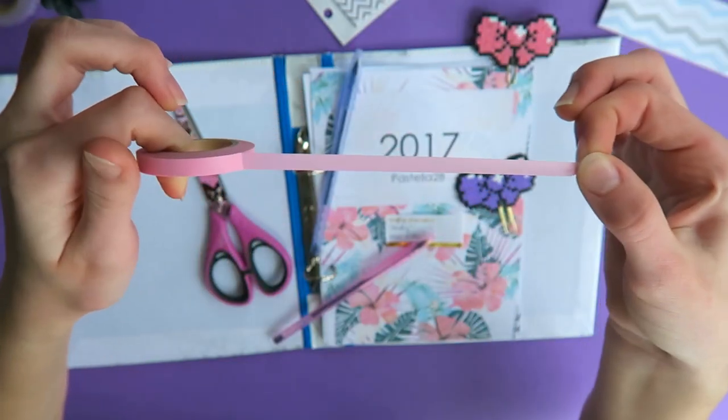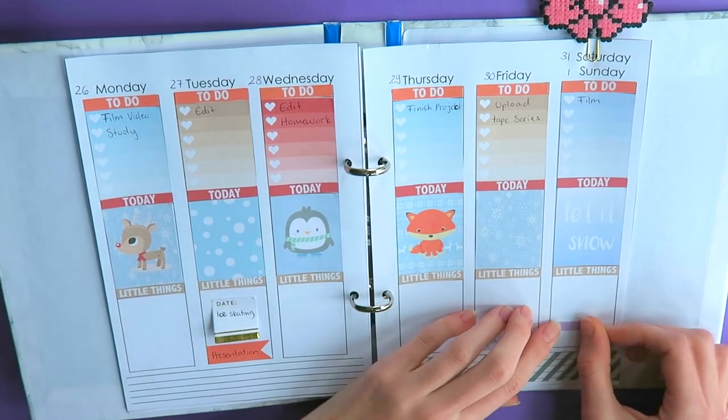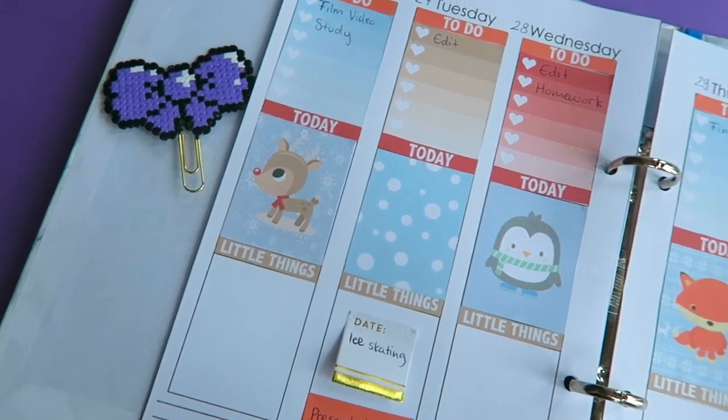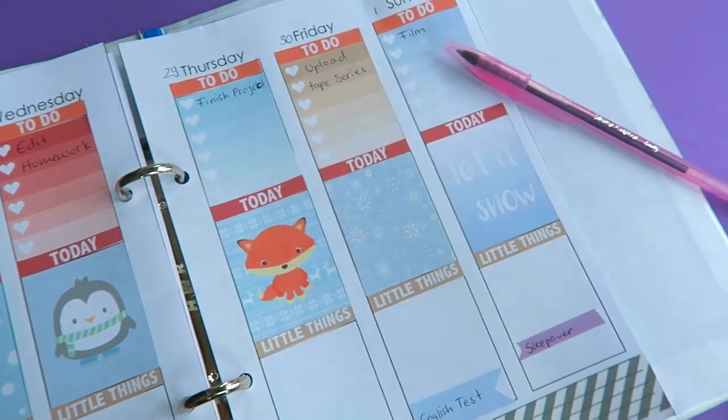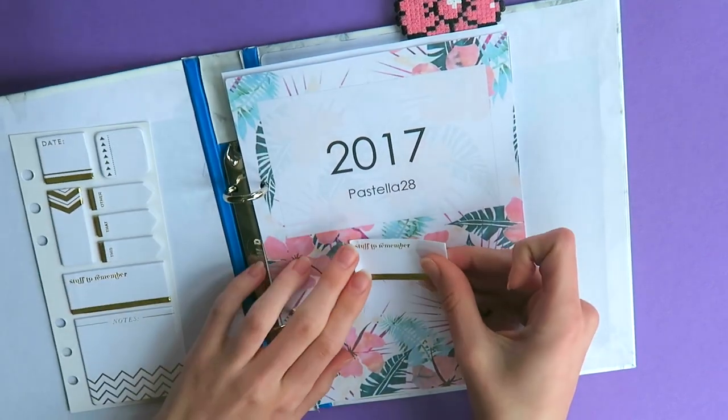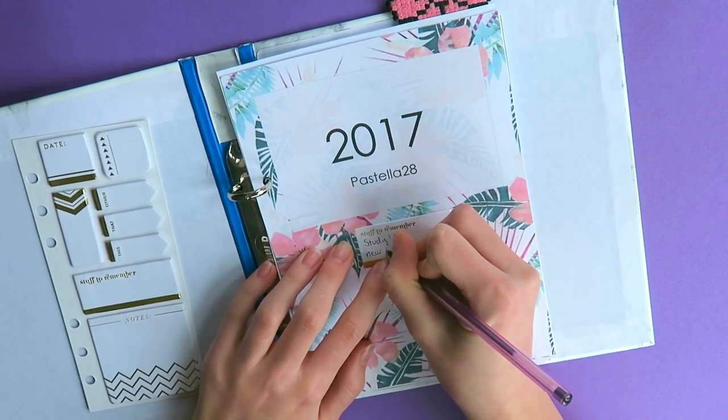You can of course also use sticky notes and washi tape to decorate however you would like. You kind of have to figure out a way of how you like to plan and then just go with it. Try to test out a bunch of different things and then just go with what works best for you and have fun with it. So also in the front here, I used some sticky notes and just added it on there. And then I just wrote down a few important things that I'm not allowed to forget.